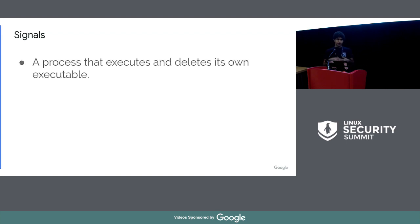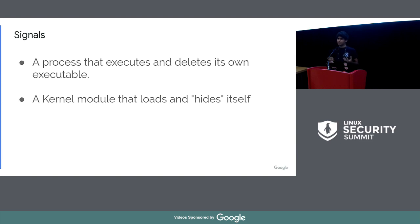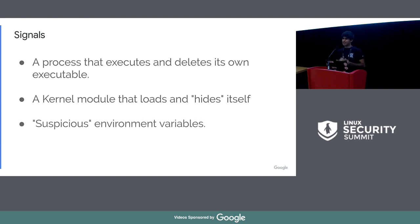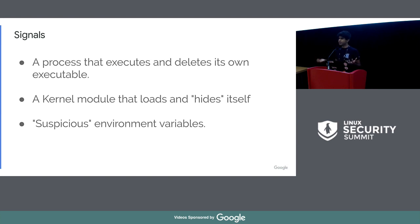What are some examples of signals? A process that executes and deletes its own executable — shouldn't happen, could happen, but it doesn't mean you need to always deny it. A kernel module that loads and then hides itself in /proc/modules — why would it do that? Suspicious environment variables: if you see LD_PRELOAD being set twice on the environment vector, why is that happening? Maybe it's an honest mistake, or maybe somebody is trying to fool libc into doing something. These are all signals of malicious activity.